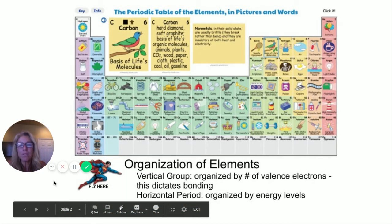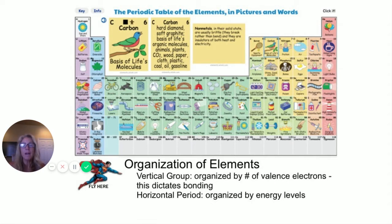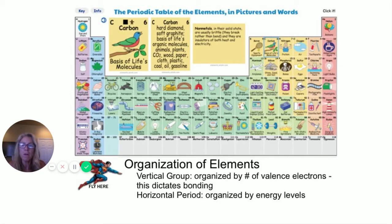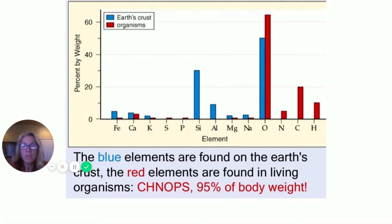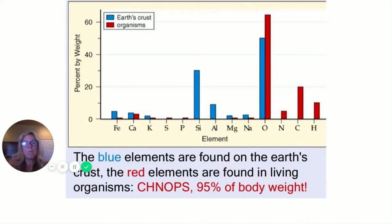The first thing I want to show you is the periodic table of elements. Periods are the horizontal rows and groups are vertical. We'll be looking at some different characteristics. If you Google 'periodic table of elements pictures and words,' it's interactive — you can click on it and bring up different elements. When we look at the types of elements found in the earth versus in our body, you can analyze that chart.